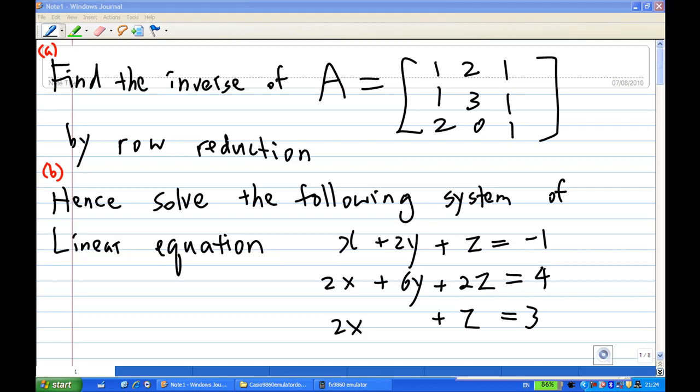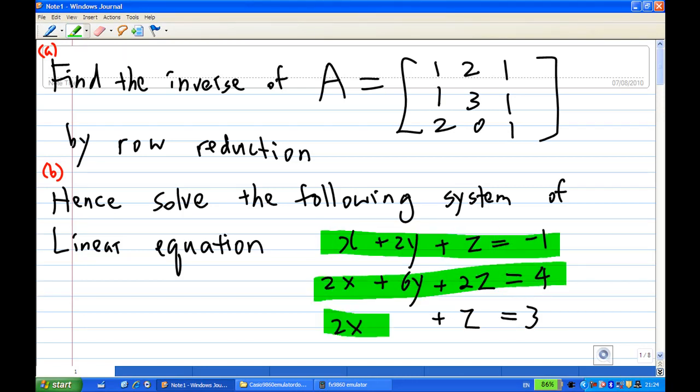In other words, use this to solve the following system of equations: x + 2y + z = -1, 2x + 6y + 2z = 4, and 2x + z = 3.